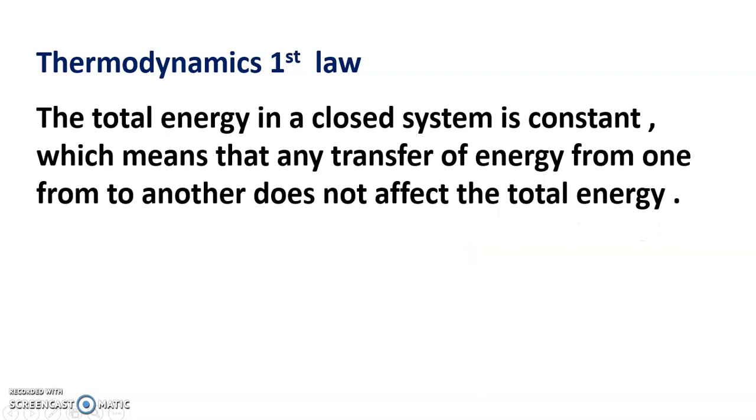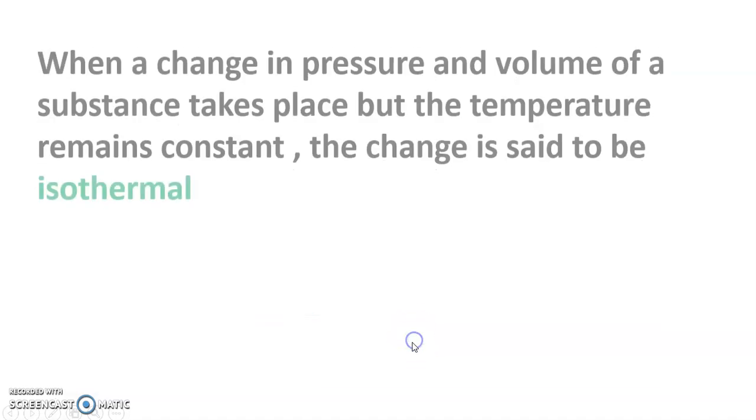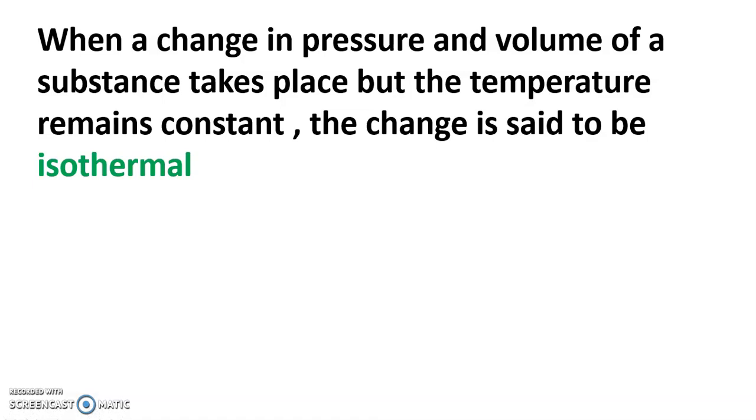The total energy in a closed system is constant, which means that any transfer of energy from one form to another does not affect the total energy: δQ = δU + δW. Reversible change: when a change in pressure and volume of a substance takes place but the temperature remains constant, the change is said to be isothermal.